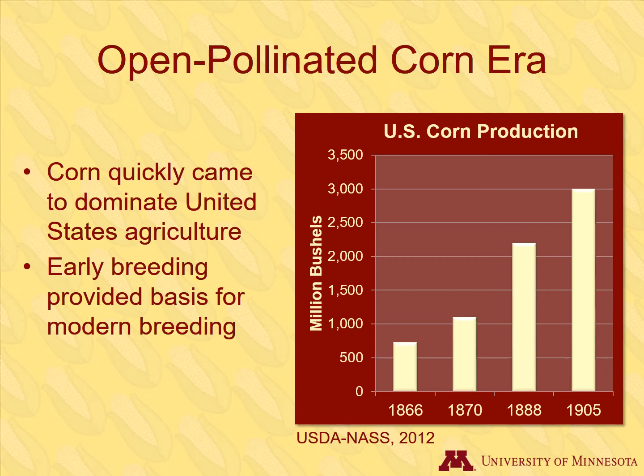Just as corn was prevalent in Native American cultures, it later also came to dominate the agriculture of the United States. By the mid-1800s, the U.S. corn crop was five times greater than other cereal and vegetable crops put together. In less than 50 years, corn production quadrupled. In 1905, the U.S. was producing 3 billion bushels, equivalent to 168 billion pounds of corn. The work of the Native Americans and early farmers laid the groundwork for the dramatic changes in corn production that would occur with modern crop breeding.